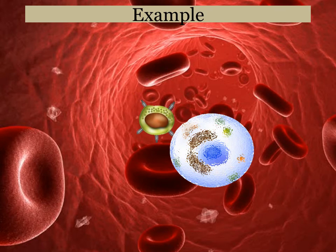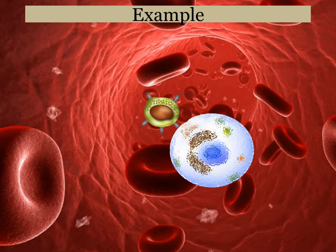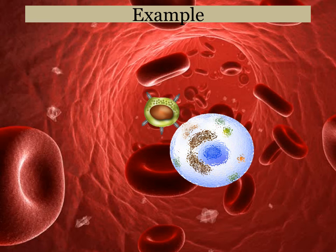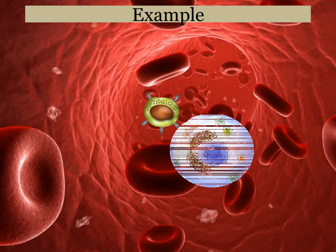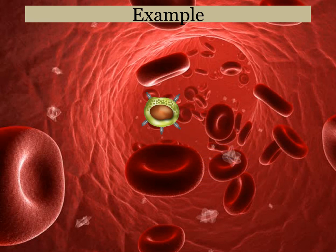Here is our killer cell being attracted to this sick cell. It's going to begin the process of inserting its perforin, resulting in the apoptosis or the breakdown of our cell.